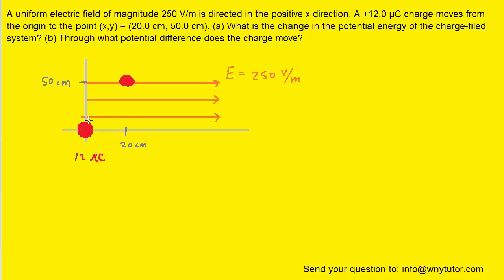So here we have a 12 micro coulomb charge that originally is situated at the origin and then it's going to be moved to a position located at 20 comma 50 centimeters, and our task is to find the change in electrical potential energy as the charge is moved from the origin to this location.